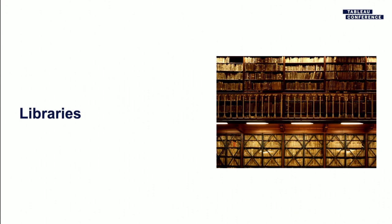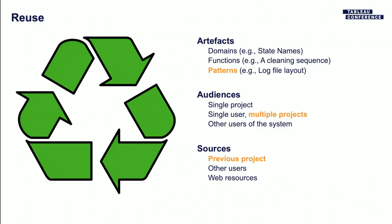The regular expression winds up attached to the project, but it turns out there's a lot of stuff like that. The system has other things for writing functions and so forth — the idea here is to promote reuse. Users produce a lot of artifacts: state names, part codes for your company, sequences of operations you want to reuse, patterns. There are different audiences for these reuse scenarios: within a single project, like the ATFC code used multiple times; across a user's multiple projects; and other people at your company who might want to share some of these things.